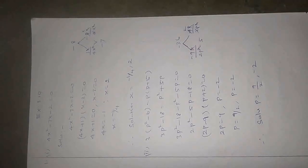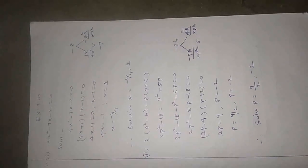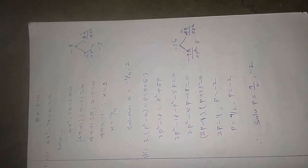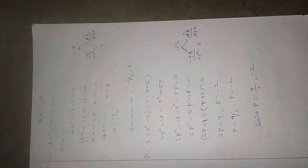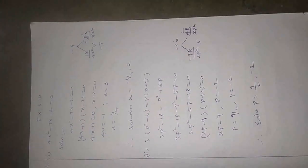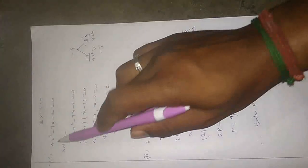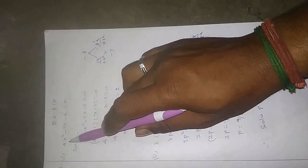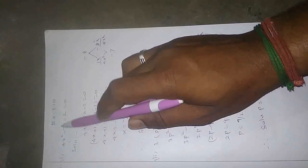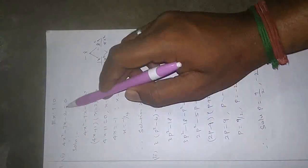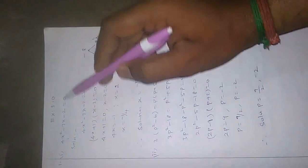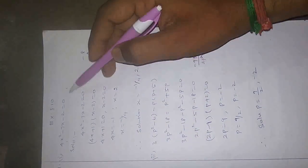By factorization method means find the factor method. So in this sum, first one: 4x squared minus 7x minus 2 is equal to 0.